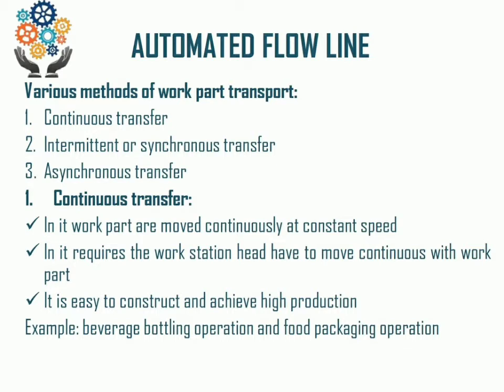In continuous transfer, the material or product moves from one work station to another work station. This type of plant layout is a product flow layout, in which the product moves continuously and all work stations are arranged along the product moving path. This type is used in food processing industries where continuous transfer type Automated Flow Lines are implemented.